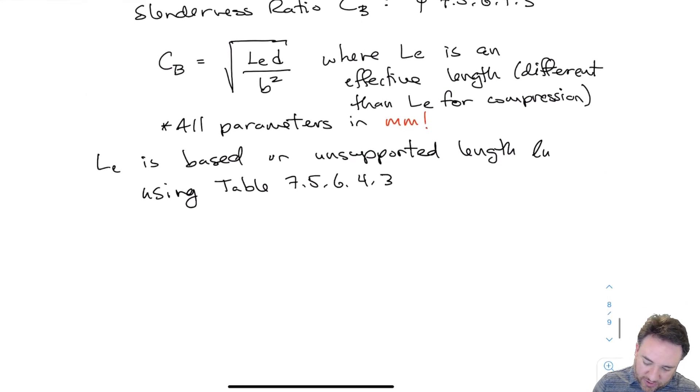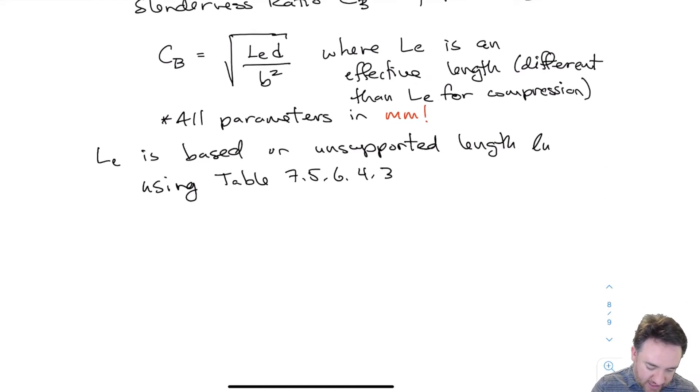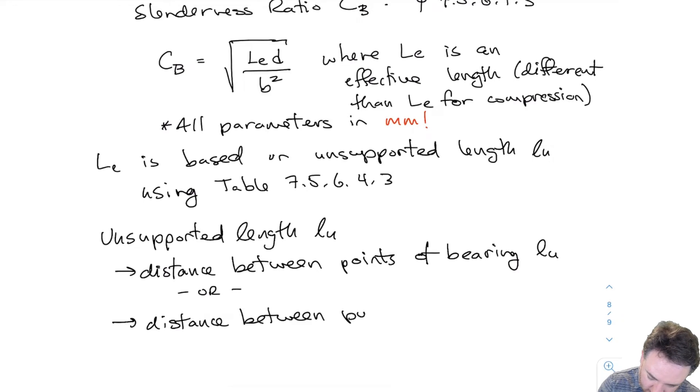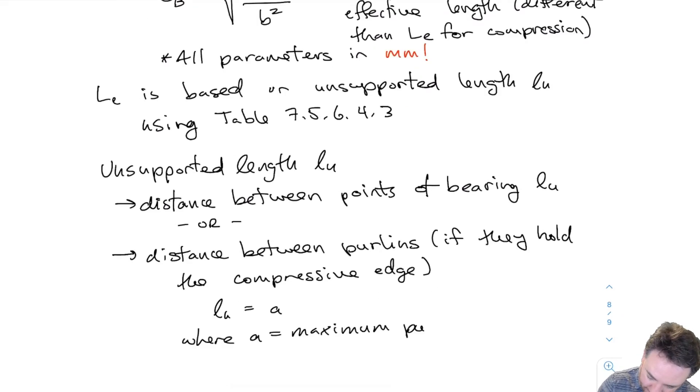The unsupported length LU is either the total length if we only have supports at bearing points, or the distance between purlins if we have purlins laterally supporting the compressive edge. If the beam goes over a support, like a multi-support beam with compression in the bottom instead of the top as we go over an intermediate support,